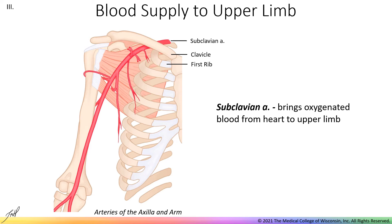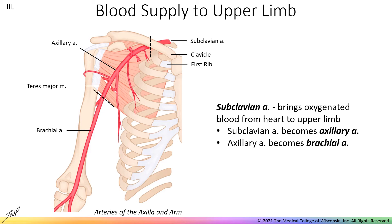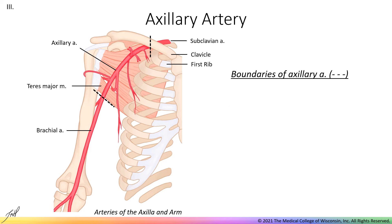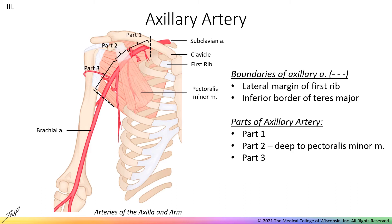Now let's turn our attention to blood supply to the upper limb, which begins with the subclavian artery. The subclavian artery carries oxygenated blood from the heart to the upper limb. As implied by the name, this vessel passes deep to the clavicle to enter the axilla. Once the subclavian artery passes the lateral border of the first rib, it changes names to the axillary artery. Then once the axillary artery passes the inferior border of the teres major muscle, it is again renamed to the brachial artery. We can divide the axillary artery into three parts, where the second part is the component laying deep to the pectoralis minor muscle.